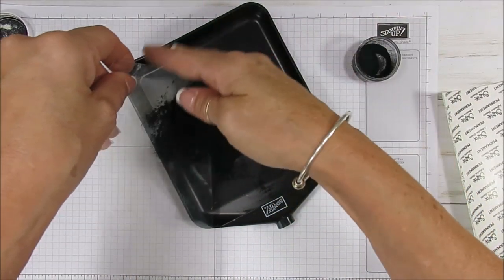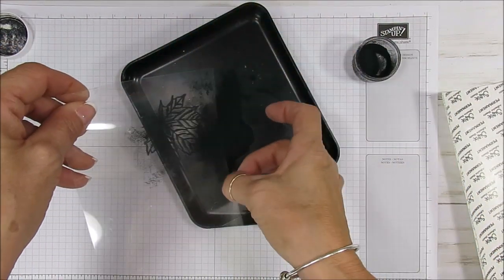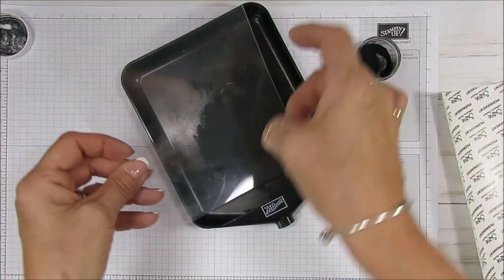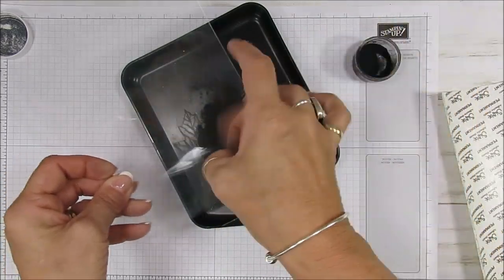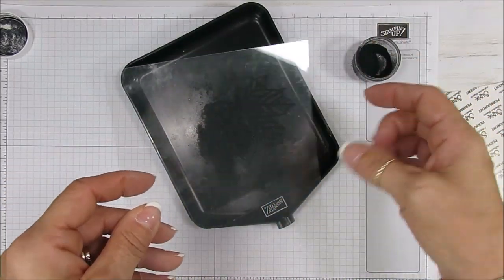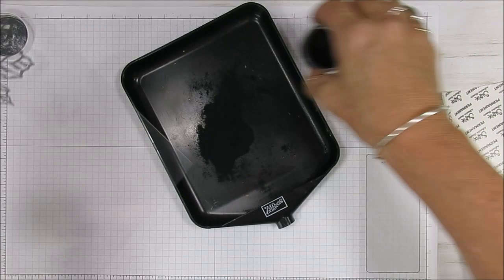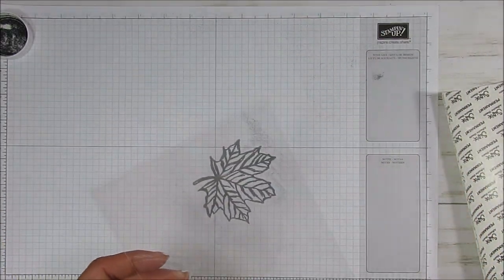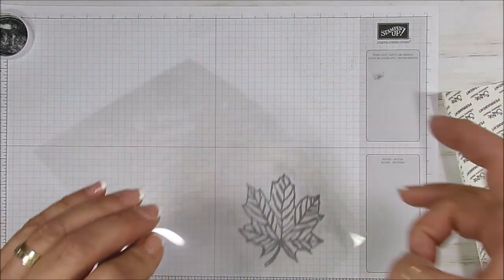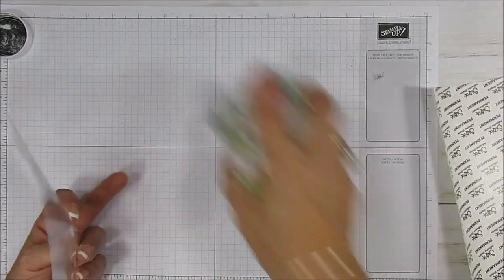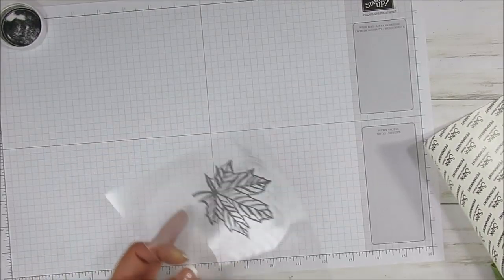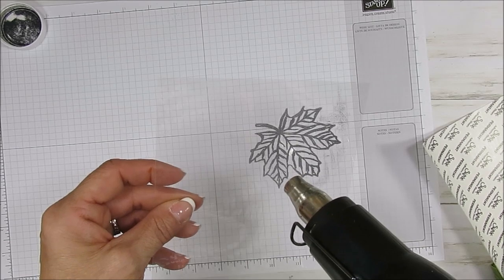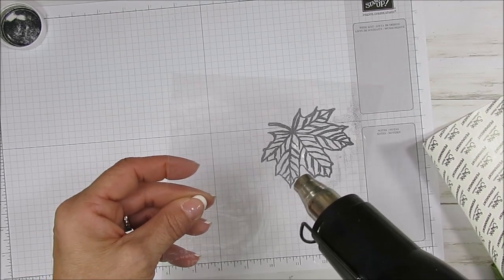Here we go and I use the embossing buddy. It should really remove here. You see the embossing buddy makes a big difference for the static. On the outside there, I'm not worried about it because it's going to get cut. So let me remove this and we're going to heat set this so it's going to emboss it.